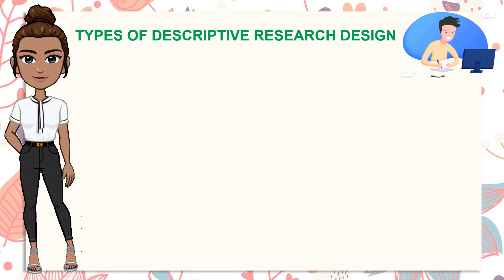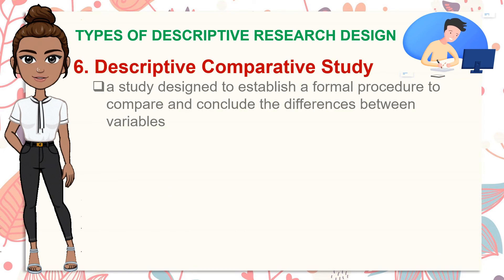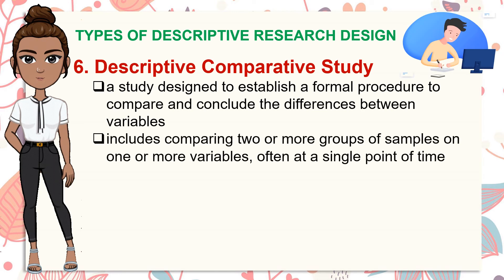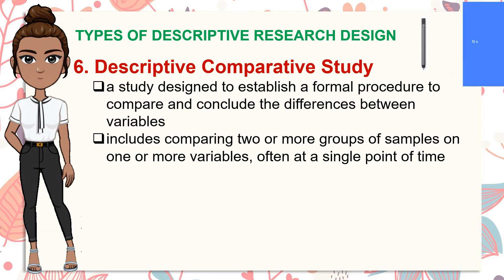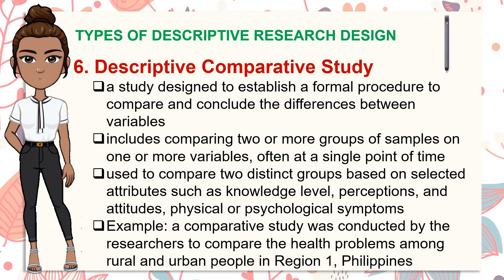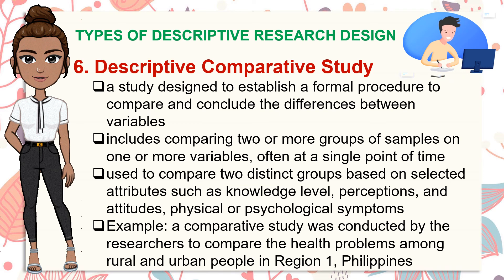The sixth type is the descriptive comparative study. This is a study designed to establish a formal procedure to compare and conclude the differences between variables. It includes comparing two or more groups of samples on one or more variables, often at a single point of time. Specifically, comparative study is used to compare two distinct groups on the basis of selected attributes such as knowledge level, perceptions and attitudes, or physical and psychological symptoms. For example, researchers compared health problems among rural and urban people in Region 1, Philippines.